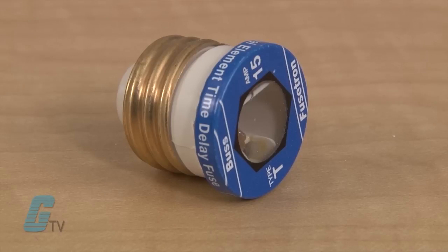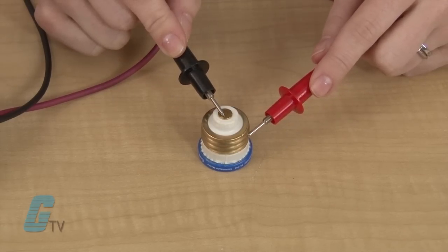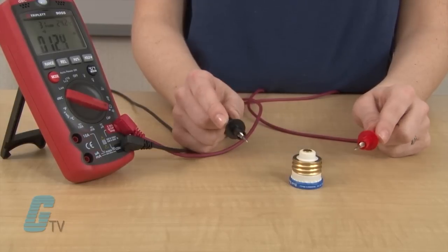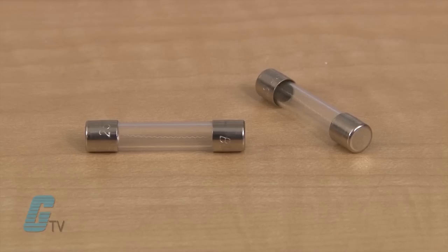A plug type fuse, often found in older residential wiring, has a connection point in the center of the bottom and on the threaded base. Cartridge fuses have metallic parts at the ends where they can be checked.